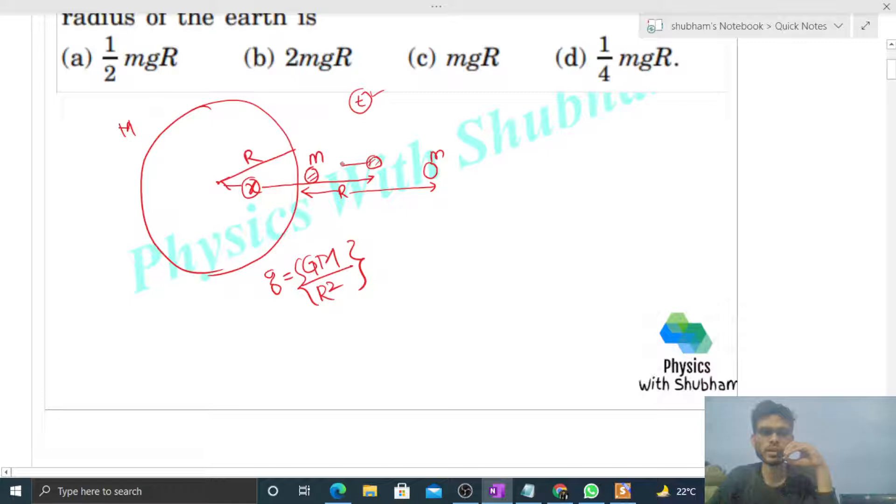Directly towards the center of earth, its magnitude will be capital G mass of the earth, mass of this object, divided by x square, the distance between the center of earth and this object squared, right? Directly towards the center of earth. Now we have to apply an external force, let's say capital F. We want to shift this object so we have to apply capital F external force.